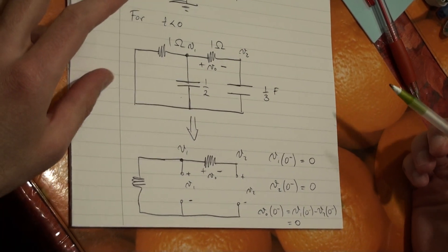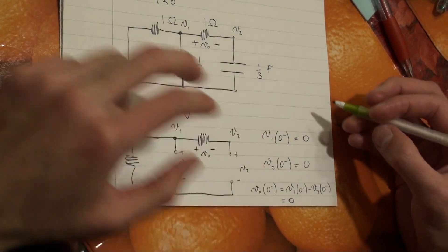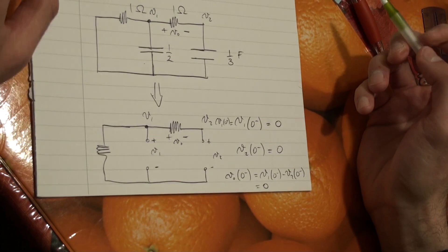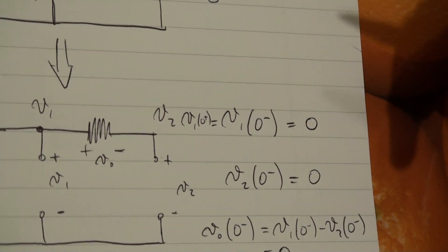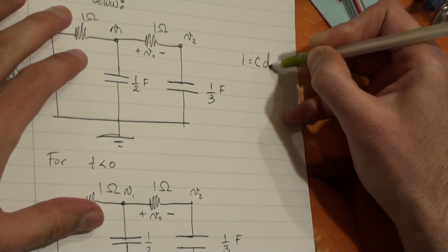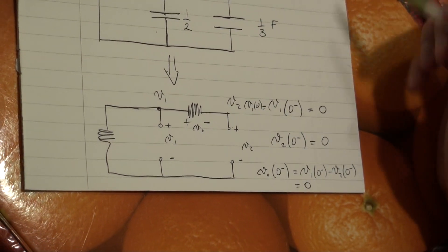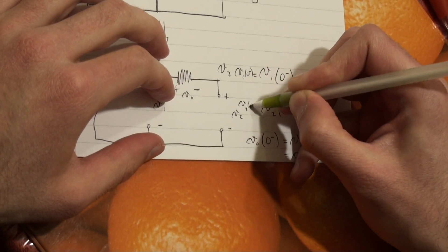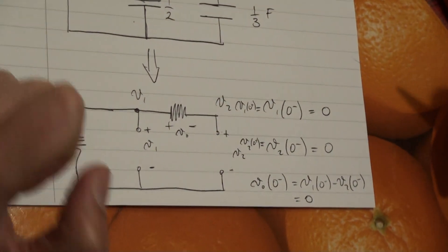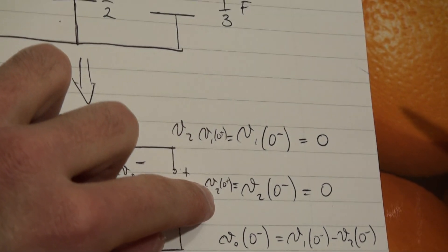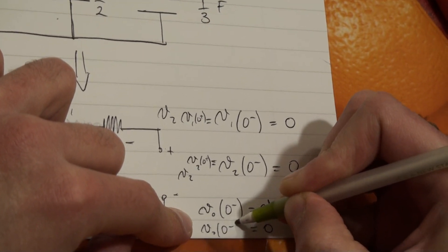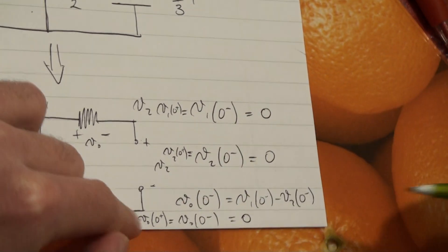Because we're dealing with capacitors, V1 at 0 minus equals V1 at 0 plus — the moment right when the switch turns on and the moment before must be equal. That's because I of the capacitor equals C·dV/dt, so the voltage across the capacitor cannot change in zero time. Therefore, since V1 at 0 minus and V2 at 0 minus are both 0, V1 at 0 plus and V2 at 0 plus are also 0, meaning V0 at 0 plus is 0 as well. So we have our initial condition.